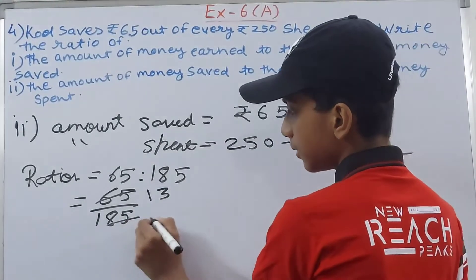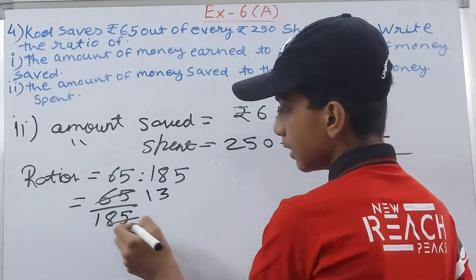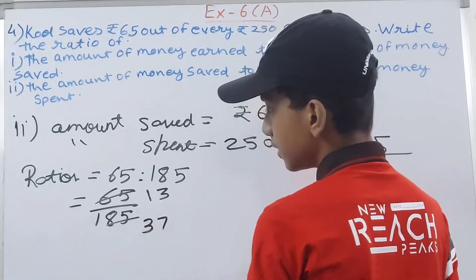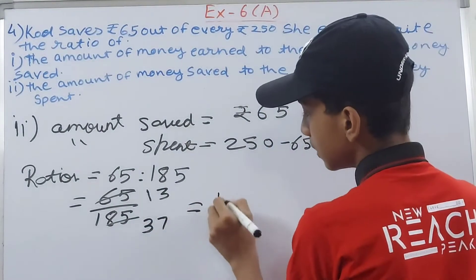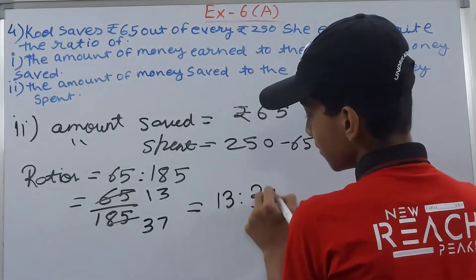So 13 is to 37 is our ratio. And this becomes our answer.